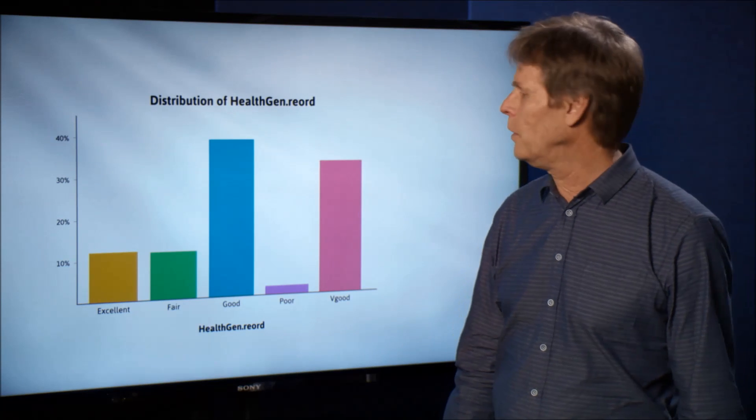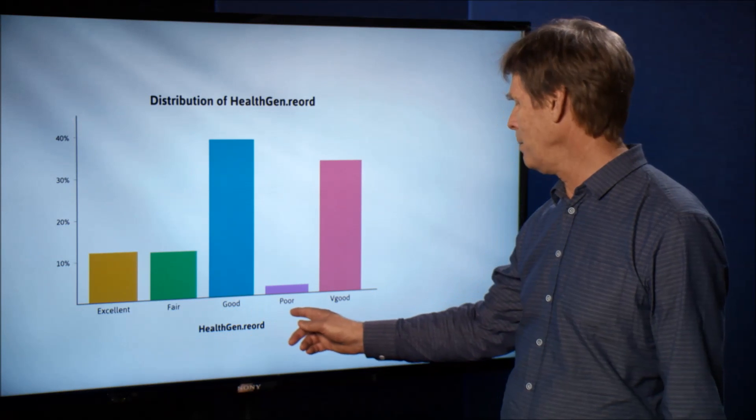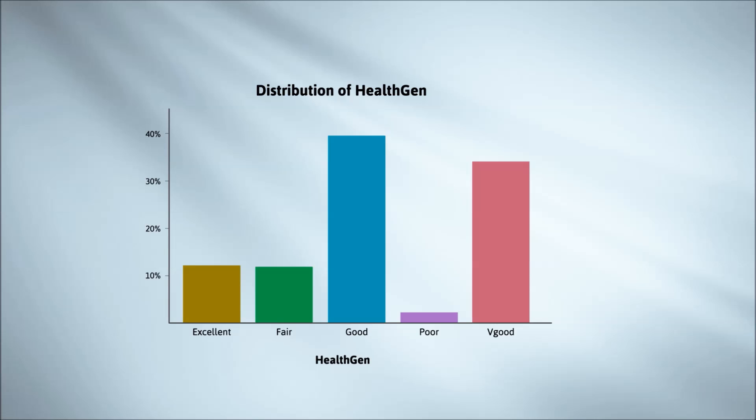But at other times, well, the ordering of the groups here—excellent, going to fair, then good, then poor, then very good—is just plain dumb.